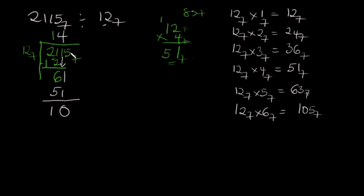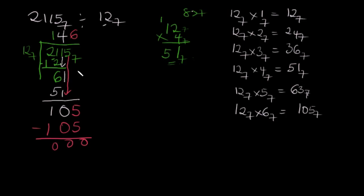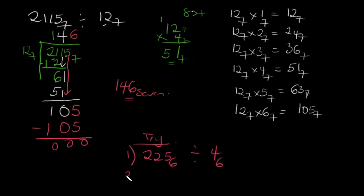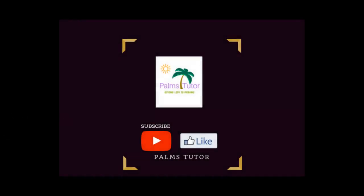We bring the next digit down to get 15. How many times can 12 go into 15? Looking at the table, 12 multiplied by 6 in base 7 gives us 105 exactly — a perfect division. So it goes in 6 times. 12 multiplied by 6 in base 7 is 105; subtract: 0 remainder. Our answer is 146 in base 7. Try these on your own: 225 base 6 divided by 4 base 6, and 1423 base 8 divided by 14 base 8. Drop your answers in the comments. Share with your friends, like the Facebook page, subscribe to the YouTube channel, and watch out for more videos.